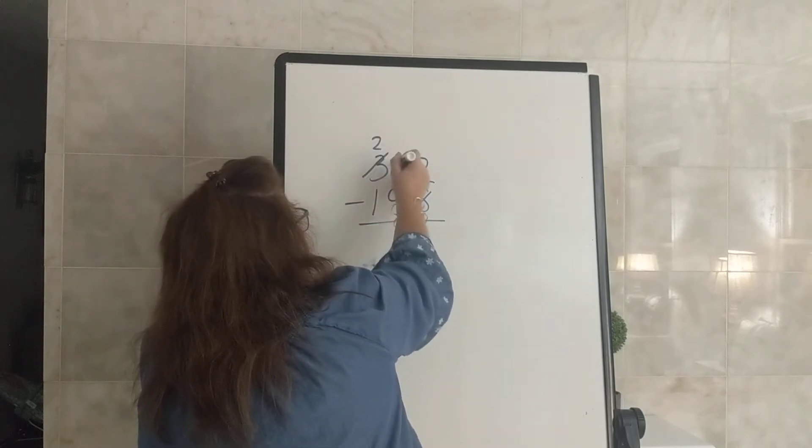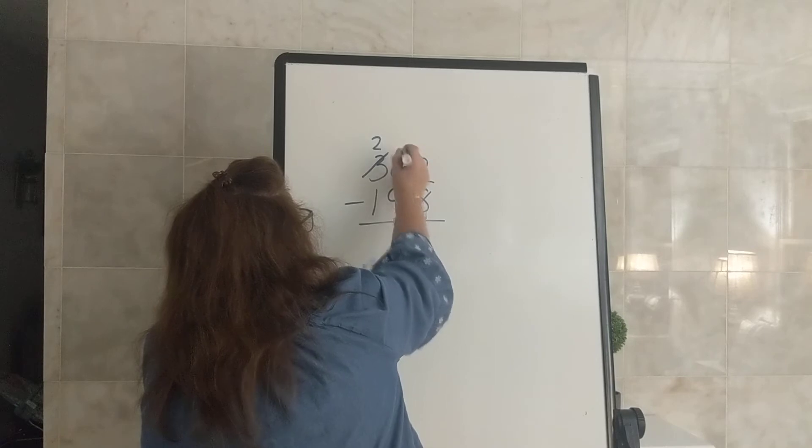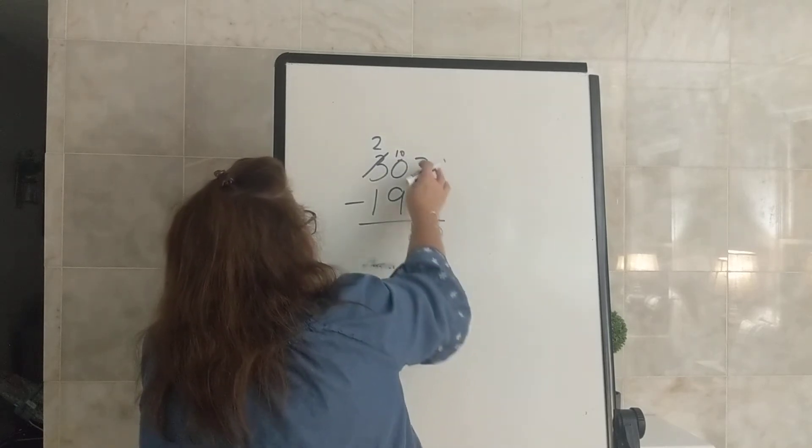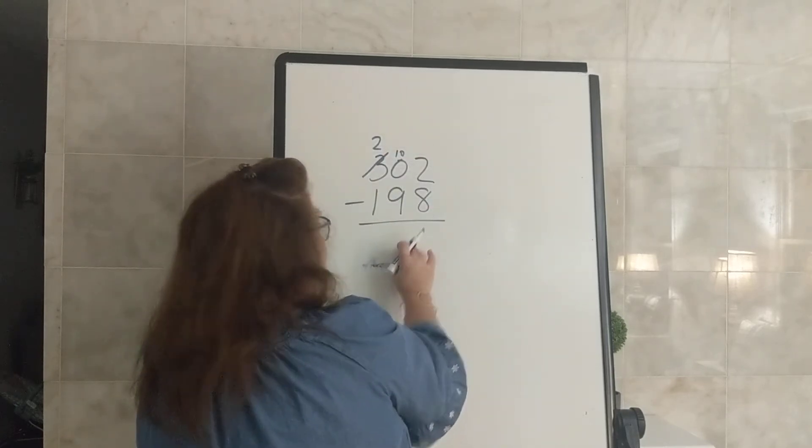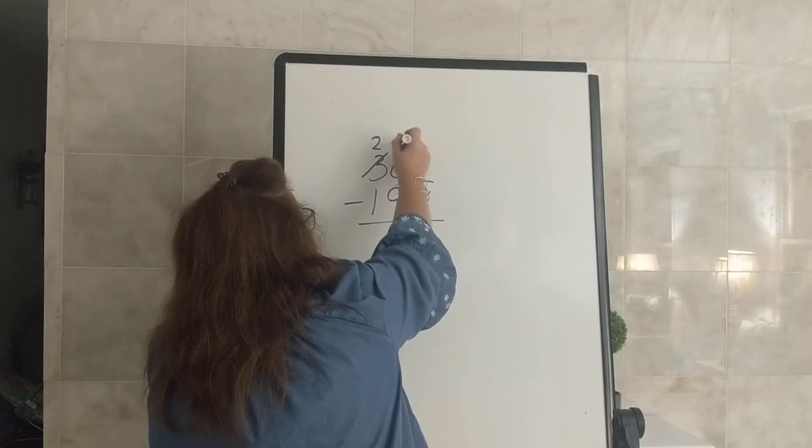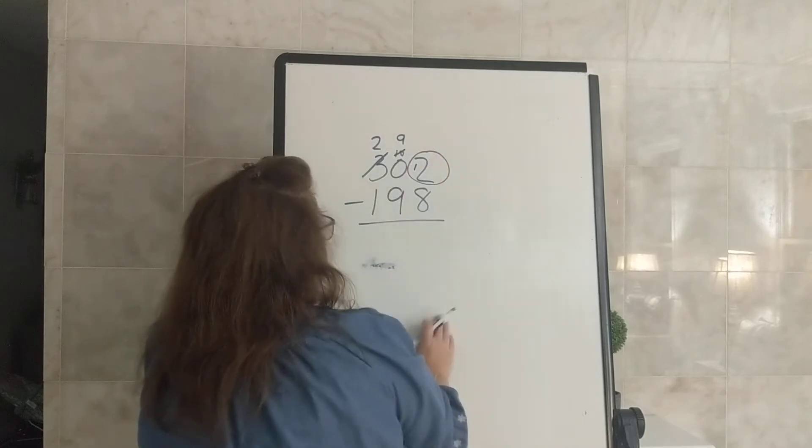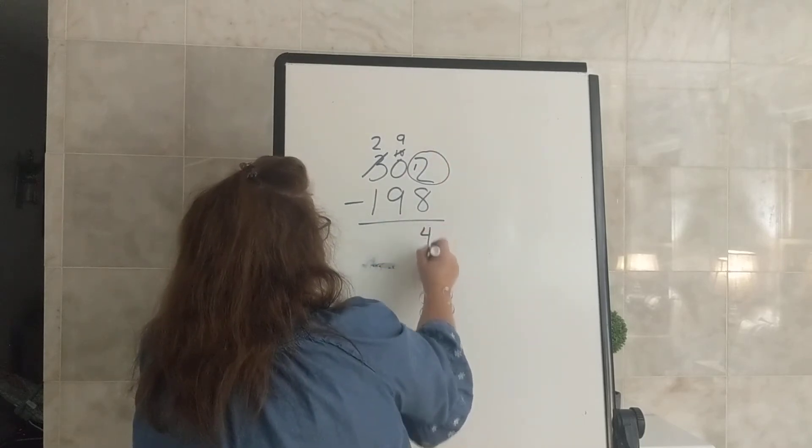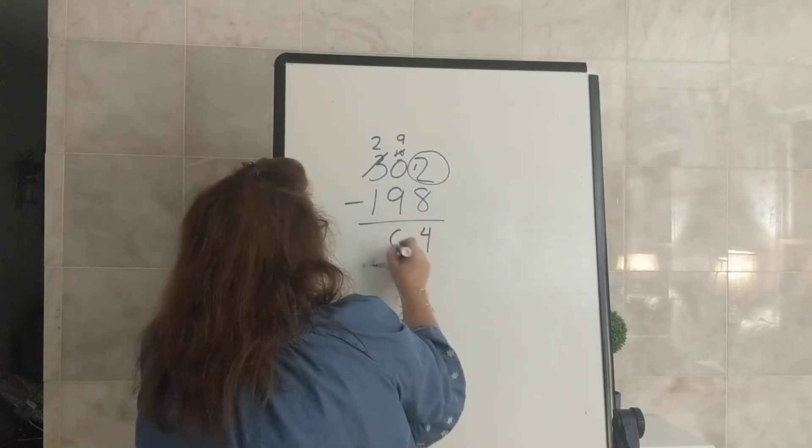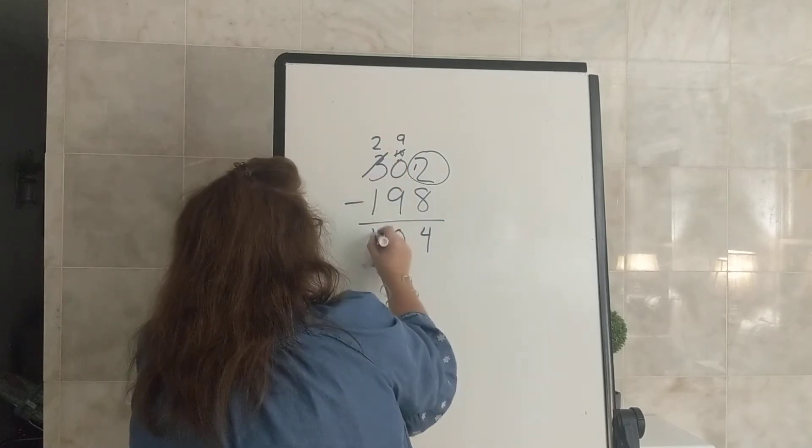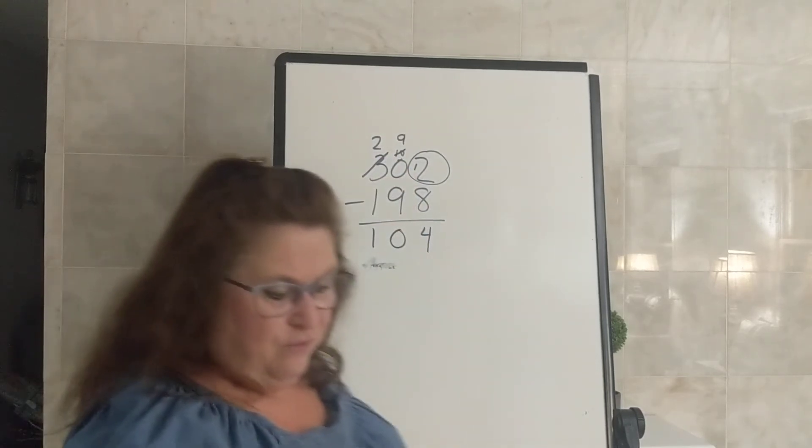Our 3 becomes a 2. She's going to loan to this guy right here so he has something to lend. So now we can borrow from him. That 10 becomes a 9, and our 2 becomes a 12. So 12 minus 8 is 4, 9 minus 9 is 0, and 2 minus 1 is 1. 104.